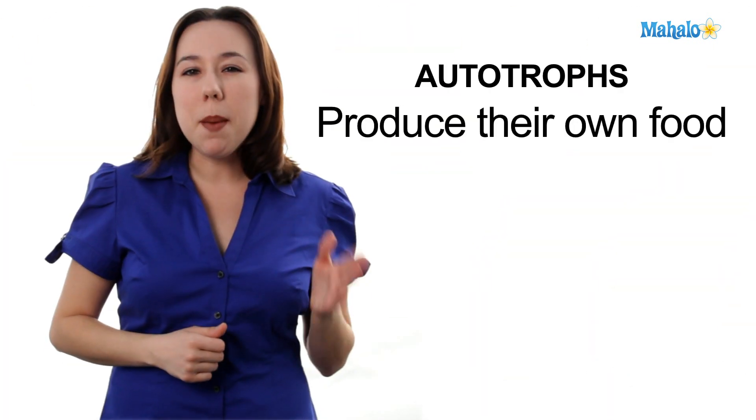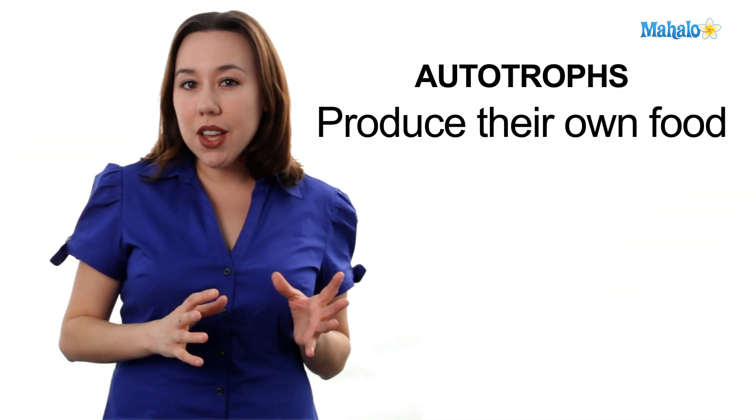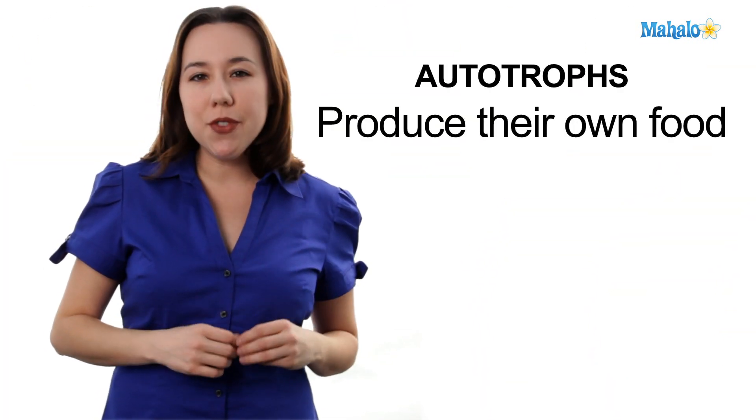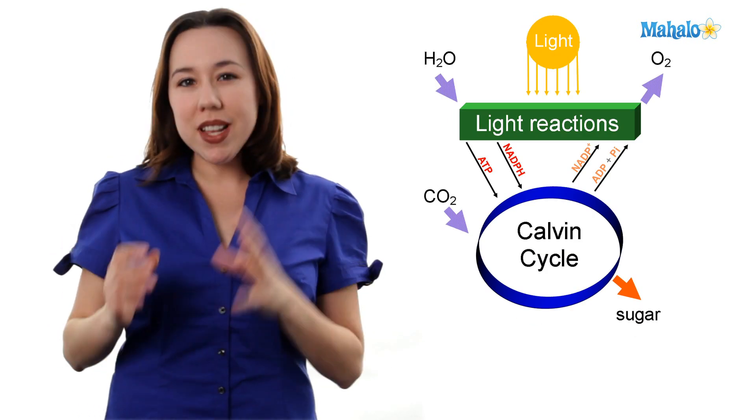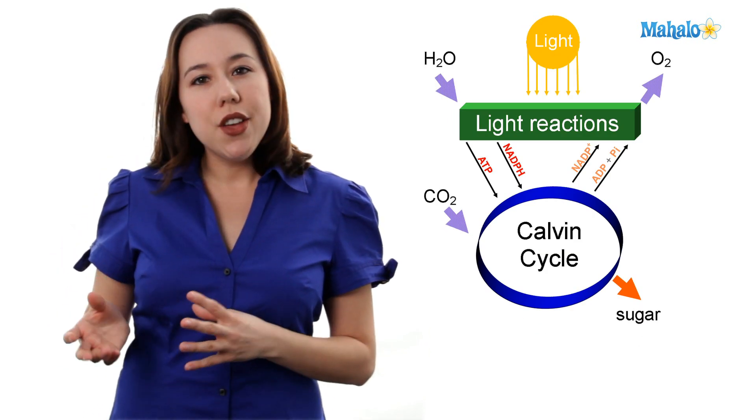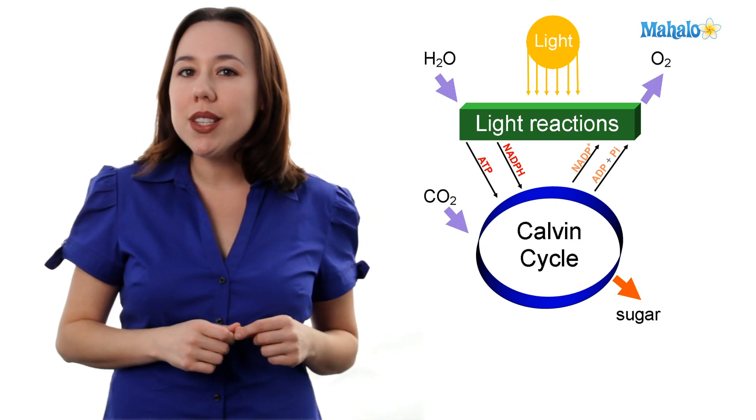Let's start with autotrophs. Autotrophs make their own food. They get their energy directly from the sun. They take the solar energy and transfer it into glucose, a sugar, through a complex process called photosynthesis. Autotrophs are extremely important to our environment because they're a foundation of every ecosystem, since they're the only ones that can harness energy directly from the sun.